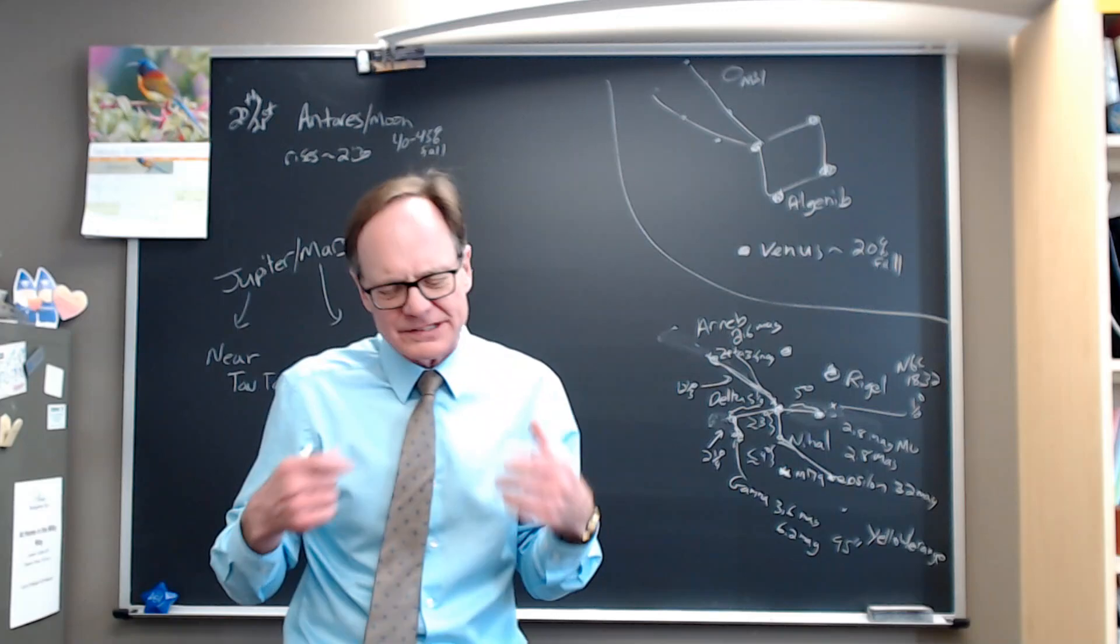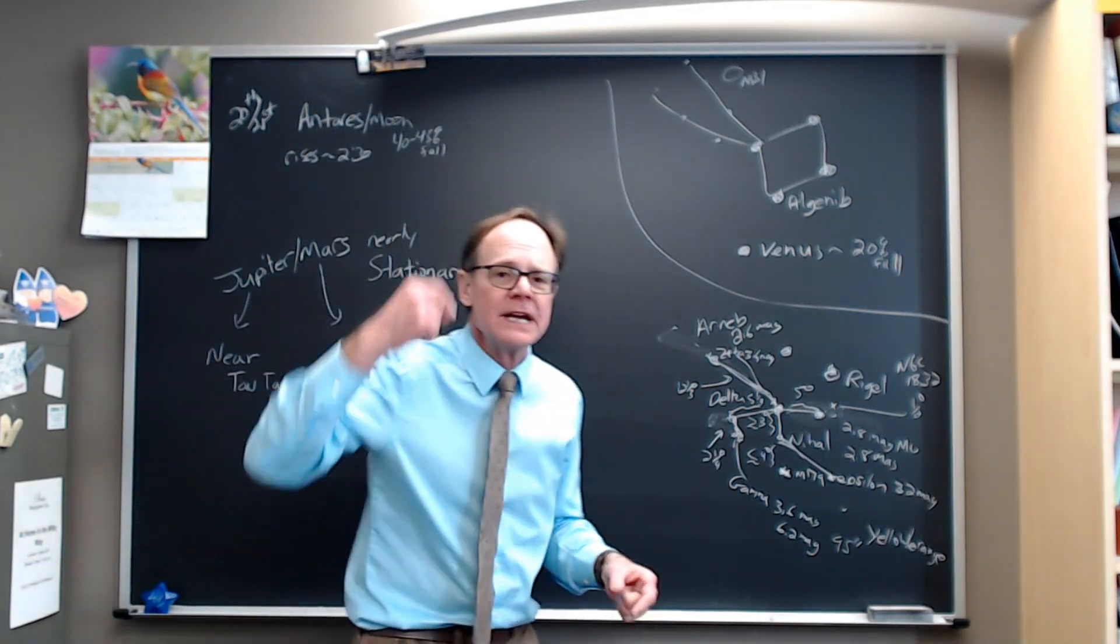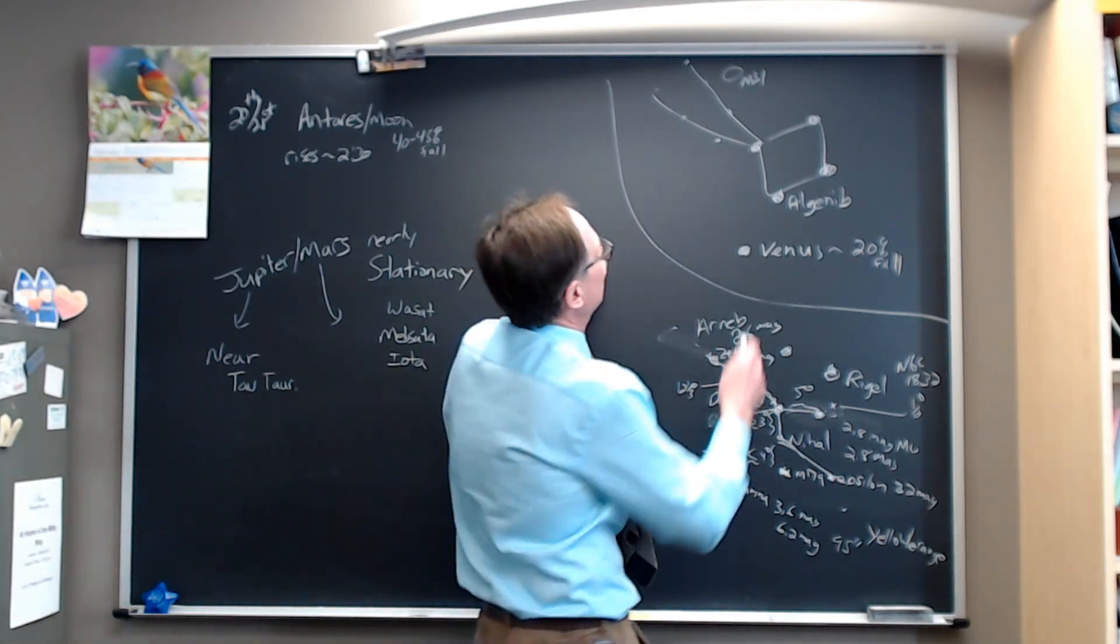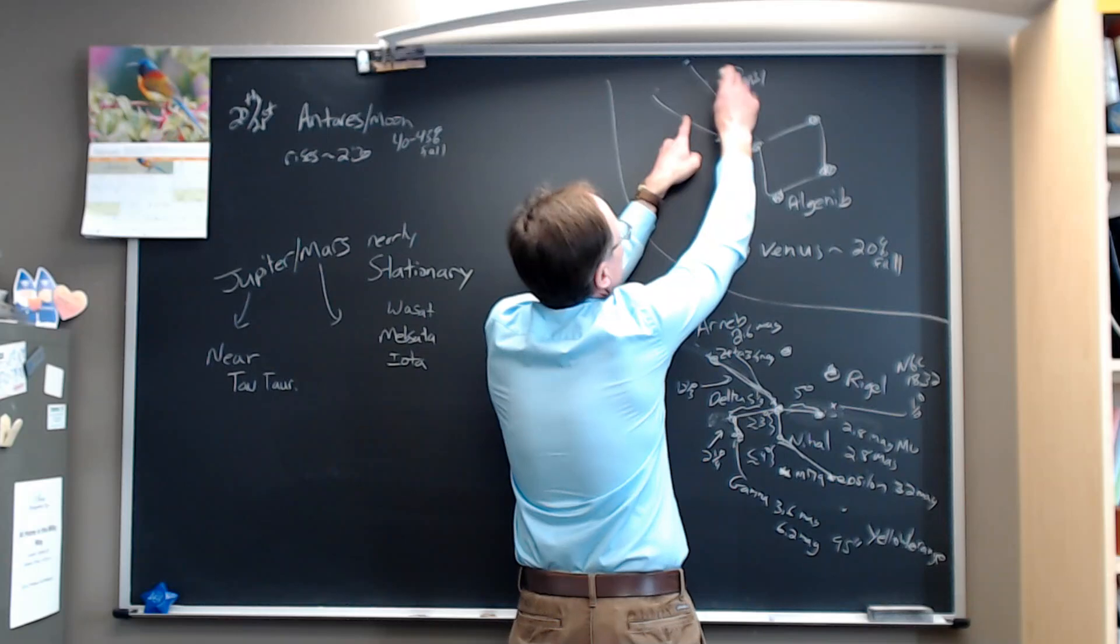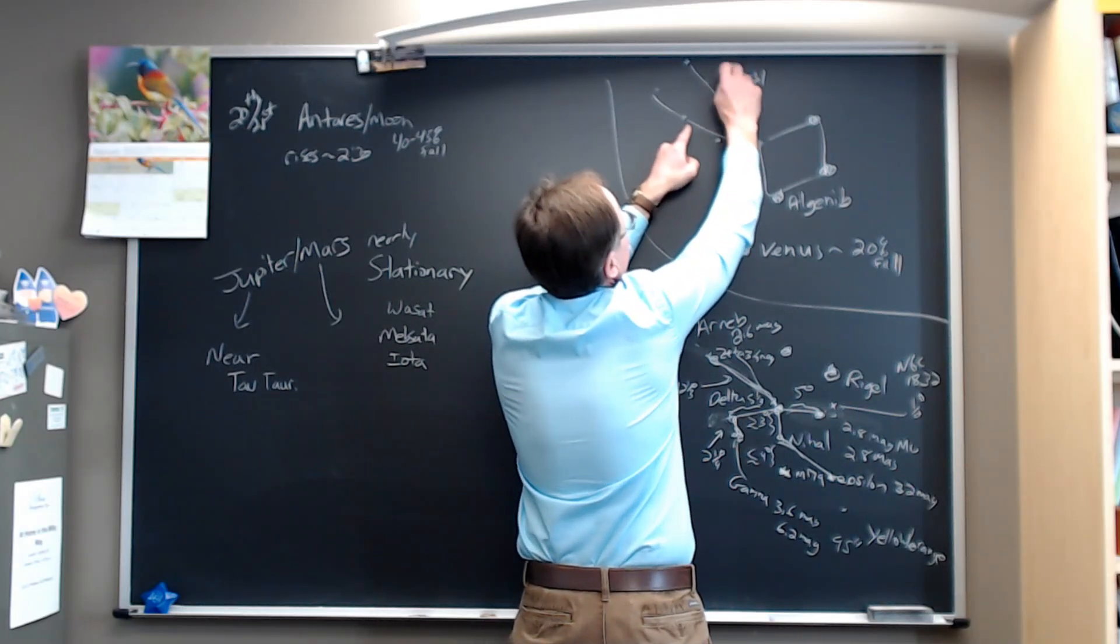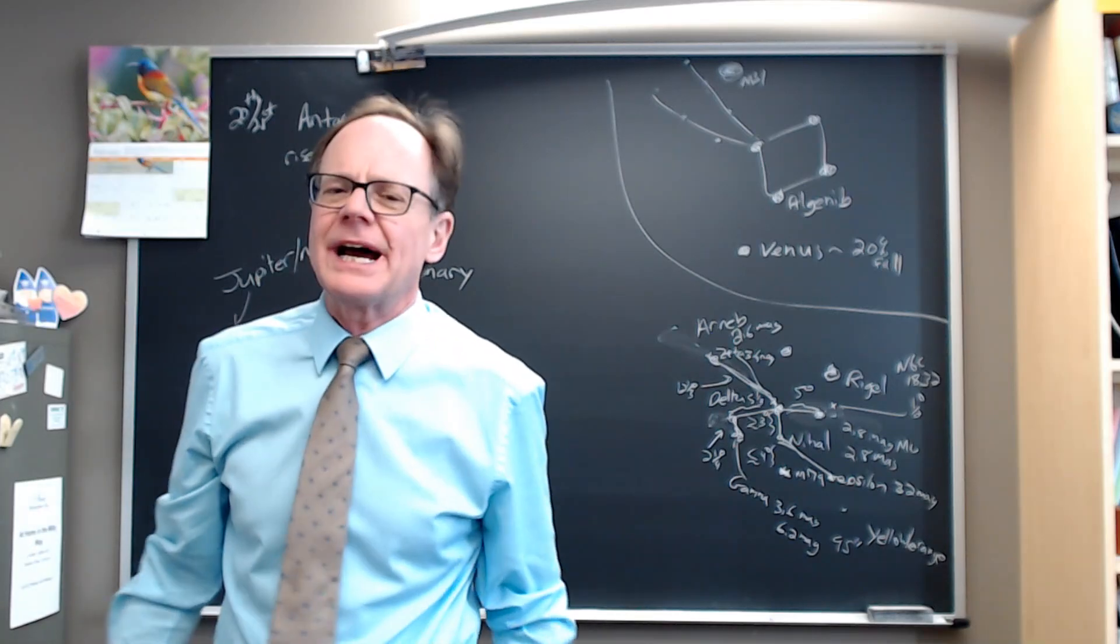So in the southwest, at dark, just after dark, go outside and check out the great square of Pegasus. As always, this is your last chance to get a really good look, not this week, but in the next few weeks. It's the last chance to get a really good look at the Andromeda galaxy.